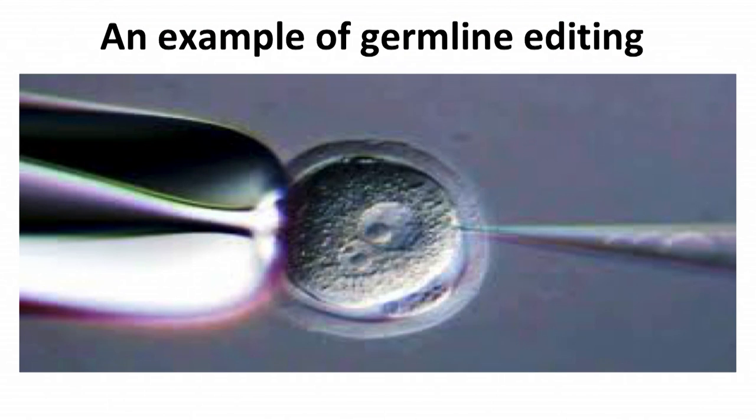This is an example of germline editing. What you're seeing here is a pipette on the left-hand side that's holding onto a fertilized egg — this is actually a fertilized mouse egg — and a needle coming in from the right that's injecting the gene editing molecules into this fertilized embryo. And when that animal then develops, it will have changes that are induced by the injected CRISPR-Cas9 molecules. Those changes will be transmitted to all of the cells of the organism, and not only that, to their children, children's children, and so on.